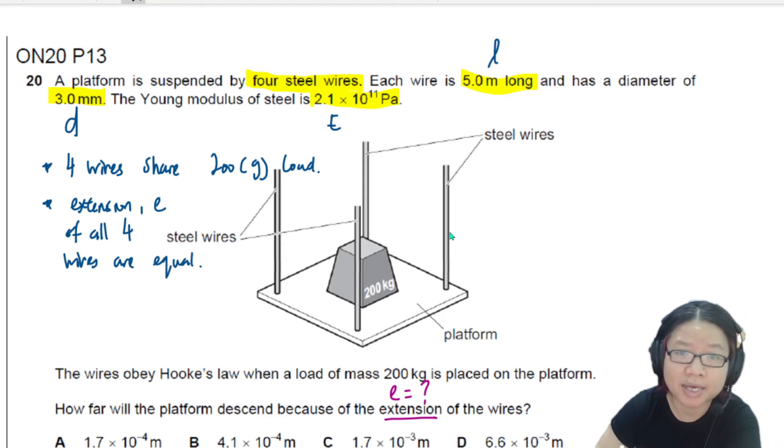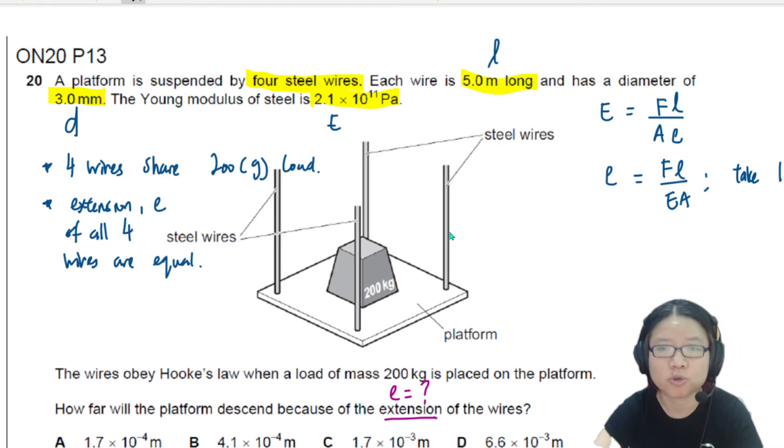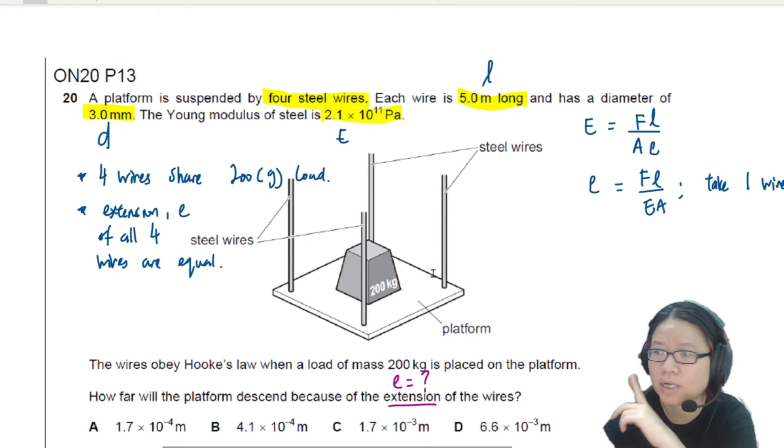So from here, I can just start off with what Young modulus is. The Young modulus equation is force over area extension over unit original length, and I can find the extension. So from here to find the extension is FL over EA, but I will take one single wire. I'm going to use this just for one single wire.